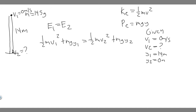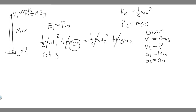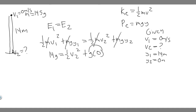You might think we don't have the mass, but notice that every term has an M, so we can cancel it from every term. Now plugging in: V1 is 0, so ½(0²) is just 0. It simplifies to: g·y₁ = ½v₂² + g·y₂. Y1 is 14, so we have 14g on the left. Y2 is 0, so g·y₂ is 0. So really: 14g = ½v₂².